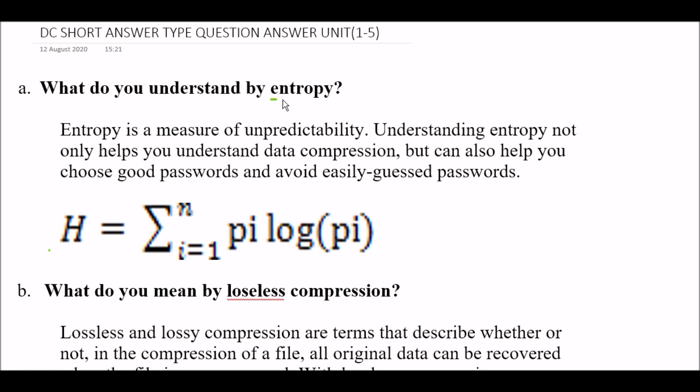Entropy is a very important topic from unit 1. Entropy is a measure of unpredictability. Understanding entropy not only helps you understand data compression but can also help you choose good passwords and avoid easily guessed passwords. The formula for finding entropy is H equals summation i equals 1 to n. Here summation means to add, so pi log pi where pi stands for probabilities.